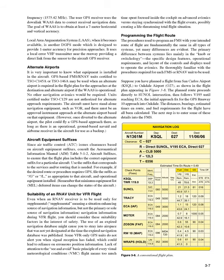Aircraft equipment suffixes: since air traffic control (ATC) issues clearances based on aircraft equipment suffixes, consult the Aeronautical Information Manual (AIM) Table 5-1-2 aircraft suffixes to ensure that the flight plan includes the correct equipment suffix for a particular aircraft. Use the suffix that corresponds to the services and routing that is needed. For example, if the desired route or procedure requires GPS, file the suffix /G or /L, as appropriate to that aircraft and operational equipment installed. Remember that minimum equipment list (MEL) deferred items can change the status of the aircraft.